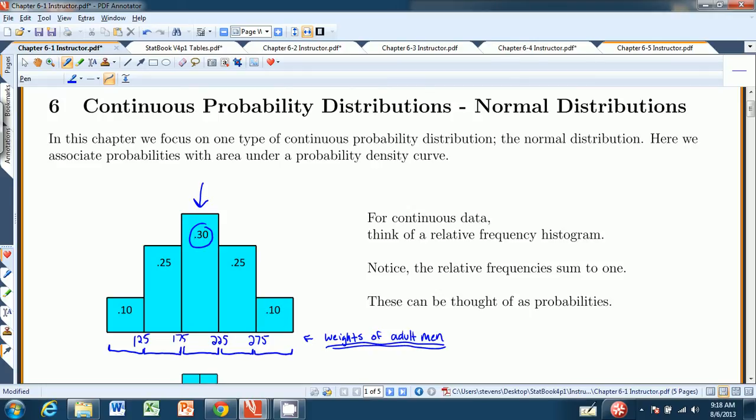The probability of randomly selecting a man between 225 and 275 is 0.25. What you should notice is that if you add up all of these relative frequencies, or all of these probabilities, they sum to 1. So all those probabilities add up to 1.